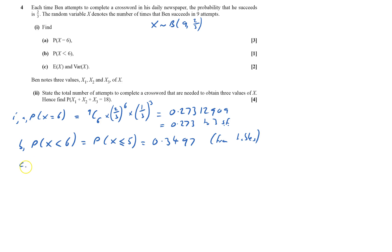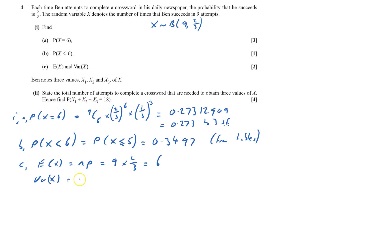Part C: I've got to work out the expectation of X. From the formula sheet, expectation of X is NP, which is nine times two-thirds, which is six. And the variance of X is NPQ. NP is six, so that's six times Q, the probability of failure, which is one-third, and that gives two.